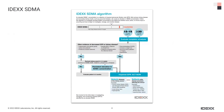To help with this, there's the IDEXX SDMA algorithm, which you can easily access. It gives guidelines on what to do. If a patient's SDMA is over 20, that patient probably needs more evaluation at that point. If it's in the 15 to 19 range — a mild elevation — we need to look at the patient and see where we're at. In any case, whether mild or more marked elevation, the first step is to evaluate a complete urinalysis: physical properties like colour, clarity, and concentrating ability; a chemical analysis with a dipstick; and a microscopic exam.